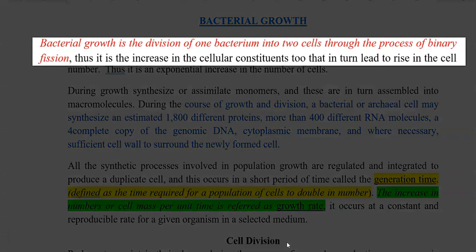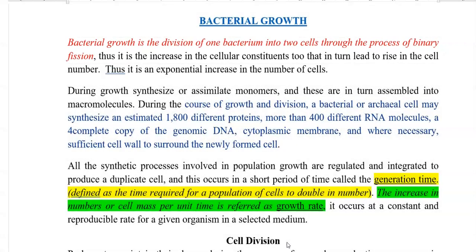Bacterial growth is the division of one bacterium into two cells through the process of binary fission. During the course of growth and division, a bacterial cell may synthesize an estimated 1,800 different types of proteins, more than 400 different types of RNA molecules, and four complete copies of the genomic DNA. Finally, a cytoplasmic membrane and a cell wall are formed to surround the newly formed cell after division.